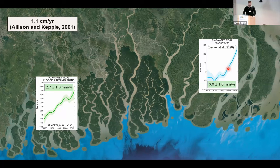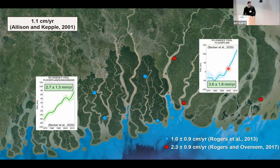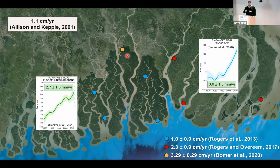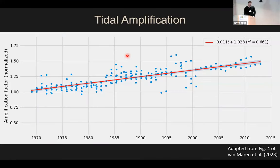All the way back to 2001, a high-level study found about a centimeter per year of elevation gain from sedimentation. More recently, point estimates match that — about a centimeter per year. As you get closer to the sediment source, the main river system, you get higher rates of about two centimeters per year. There's a forthcoming publication I'm working on right now focusing on one site with really high rates — about three centimeters per year.